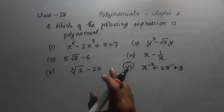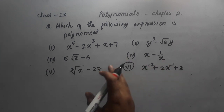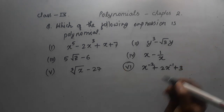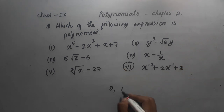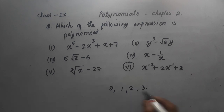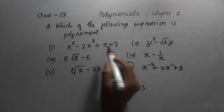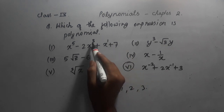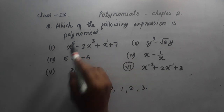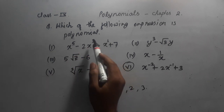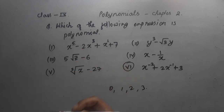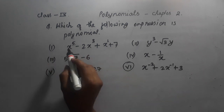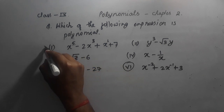A polynomial is an algebraic expression where the variable's exponents are whole numbers — that means 0, 1, 2, 3 — not negative numbers or fractions. In expression 1, the powers of x are 1, 3, and 5. Since 1, 3, and 5 are all whole numbers, this is a polynomial.